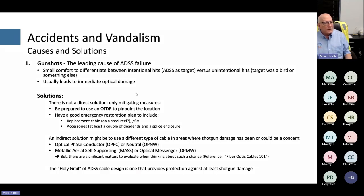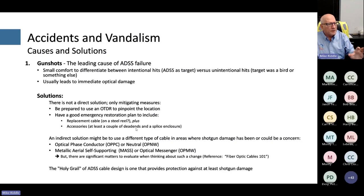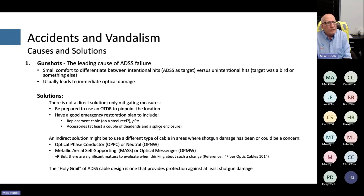There is really no direct solution for gunshot damage. The main thing is to be prepared: have an emergency response plan where you know where the OTDR is to pinpoint the location, and have spare cable, hardware, dead ends, and a splice enclosure so you can quickly get back in service. If it's a repeated problem in the same location, consider using a different type of cable.